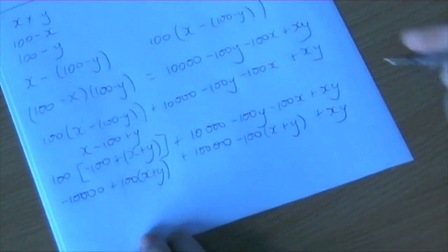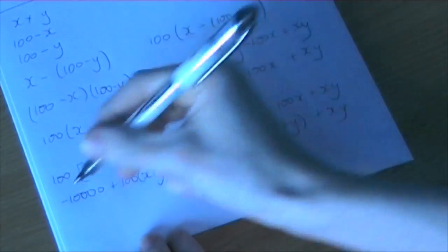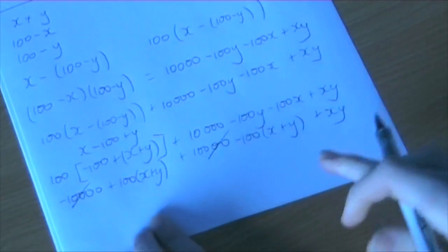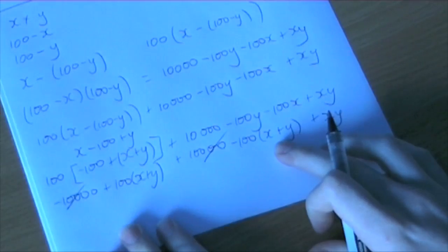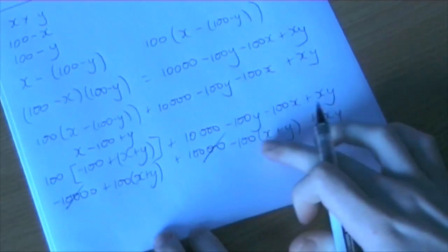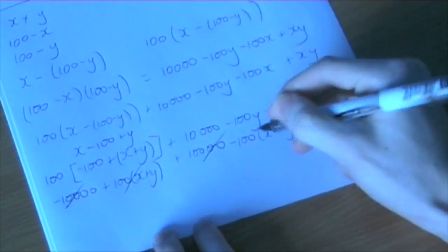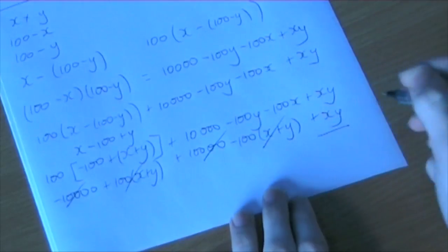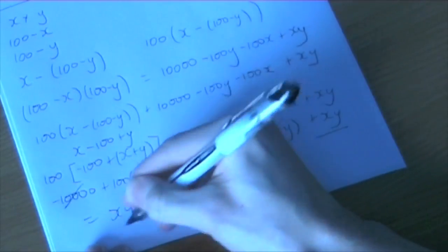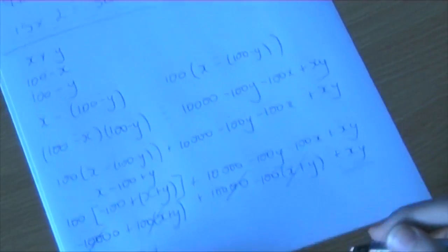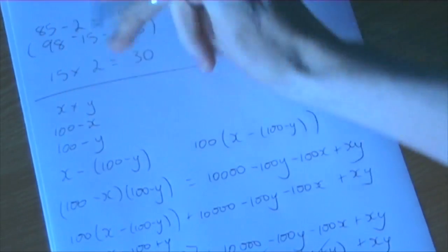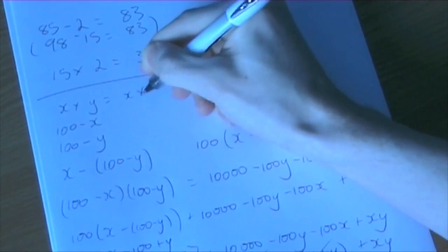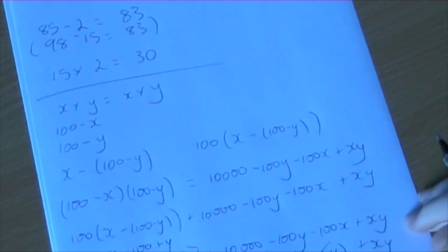Now, you may have guessed minus 10,000 plus 10,000 cancel each other out. Similarly, with plus 100 times (x plus y) and minus 100 times (x plus y), they cancel each other out. And you'll see we're just left with xy, which is, of course, x multiplied by y. So essentially, all we did was say that x times y equals x times y. So that is how the trick works.